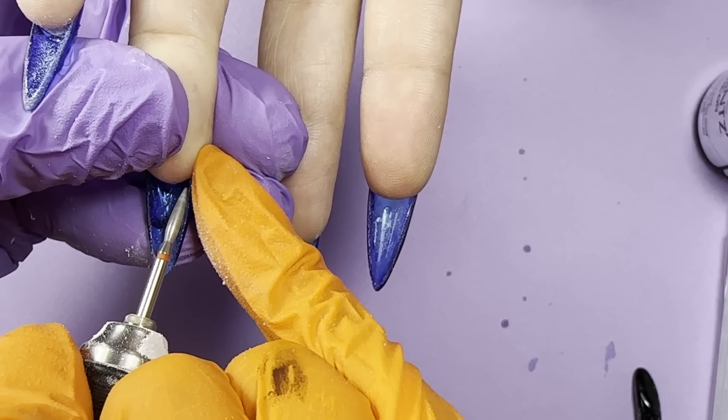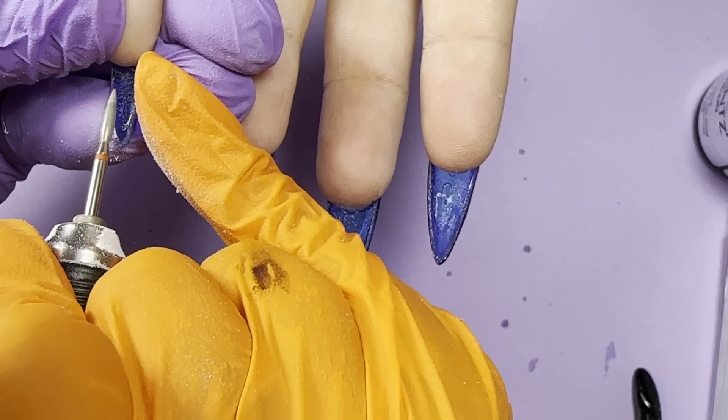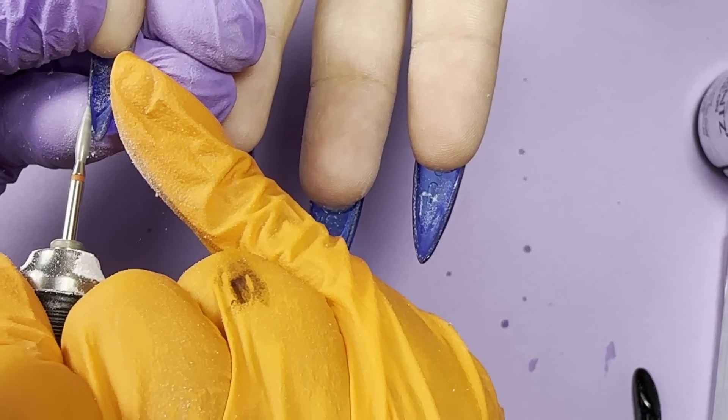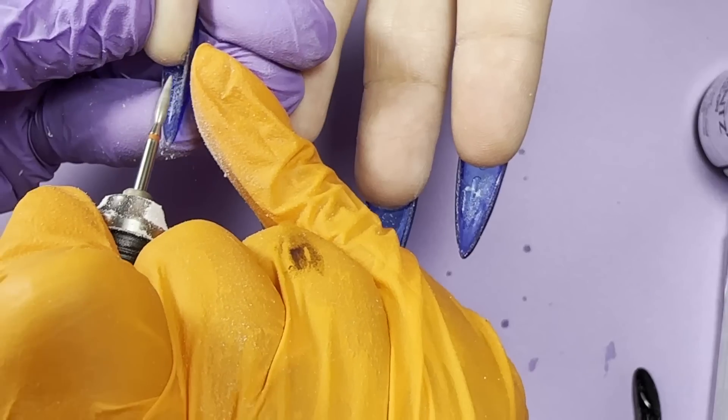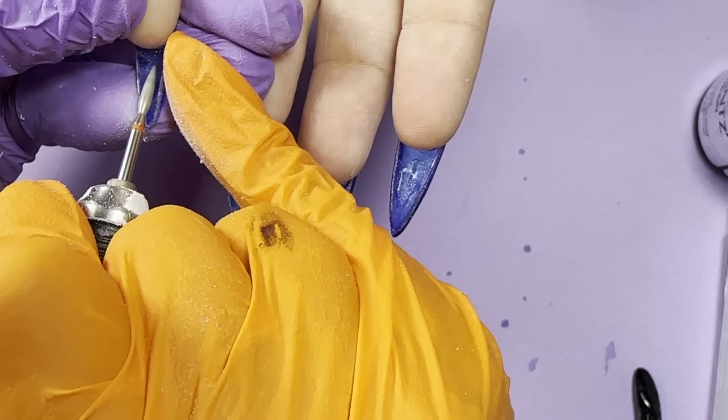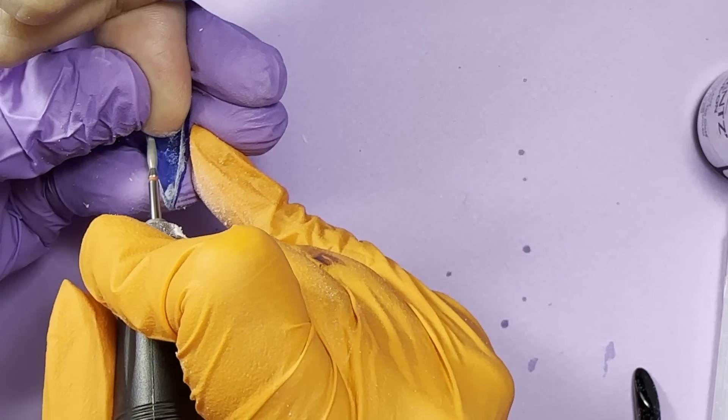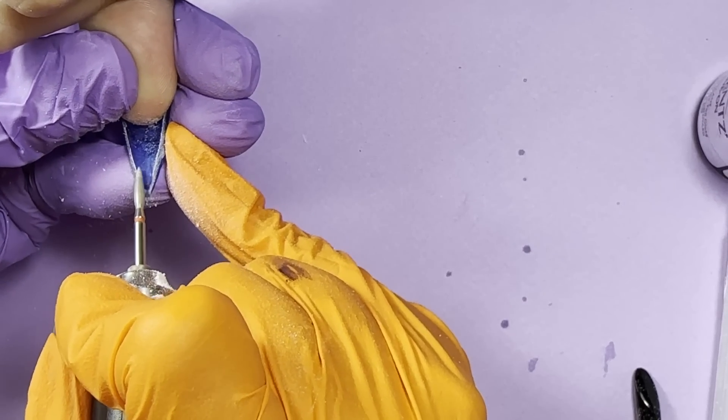And when you're doing designs like this, like a fully see-through jelly designs, it's also important to seal it from all sides, so we are also going to apply some top coat underneath the nails, so they will be fully transparent.